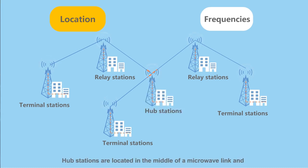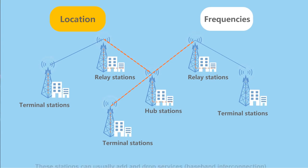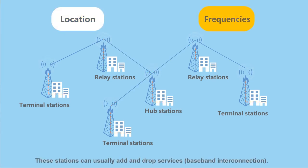Hub stations are located in the middle of a microwave link and transmit services in three or more directions. These stations can usually add and drop services, baseband interconnection.